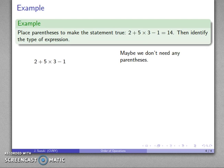So 2 plus 5 times 3 minus 1. The order of operations, we have multiplication, addition, subtraction. Multiplication has higher precedence, so multiplication is going to get done first. We'll do the 5 times 3, that's 15, and then we have addition and subtraction. They're equiprecedent, so they are evaluated from left to right. 2 plus 15 is 17, minus 1 is 16, and that's not what we want, so we do need parentheses someplace.